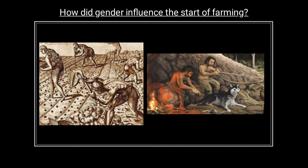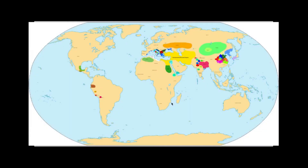Meanwhile, instead of just tracking game with the intention of killing it for meat, Neolithic men began to capture animals and domesticate them — providing for their needs and supervising their breeding. These practices gradually led to the creation of agricultural society.